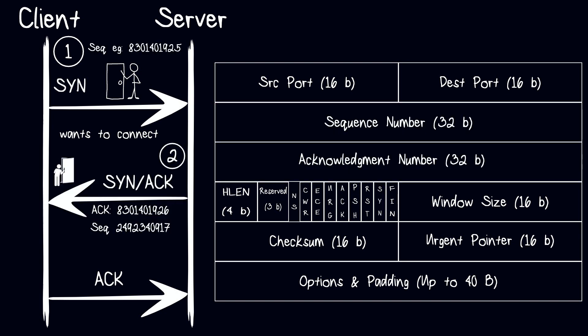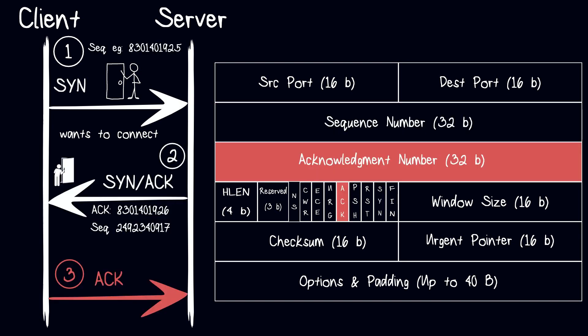When the client receives the SYN-ACK packet, it responds to the server with an ACK packet, indicating that it has received the server's response and is ready to start transmitting data. The ACK number will be the server's sent sequence number plus 1.